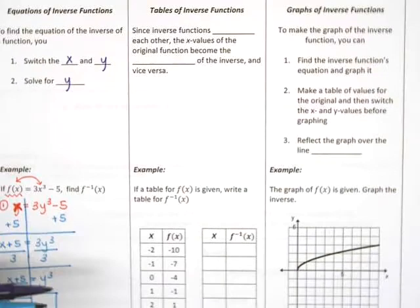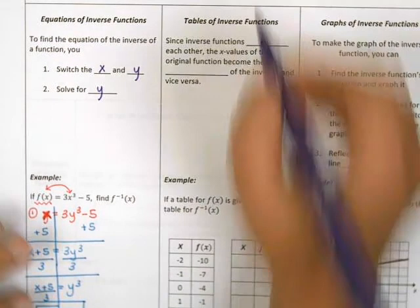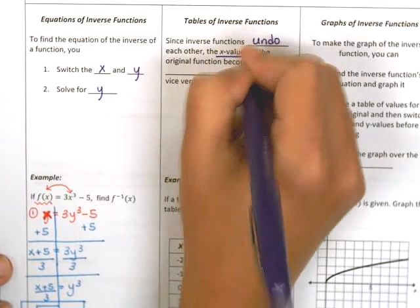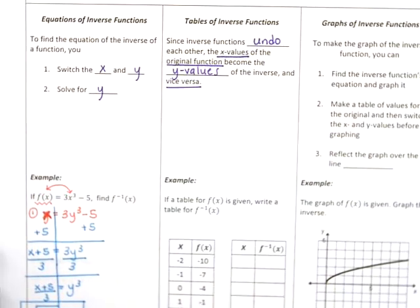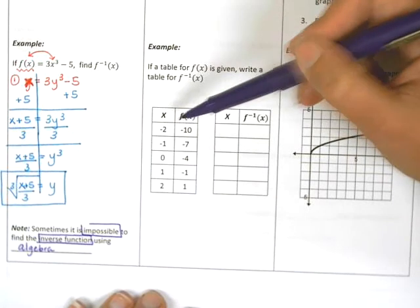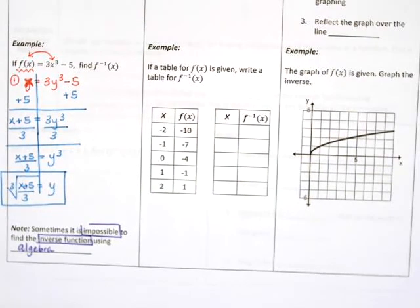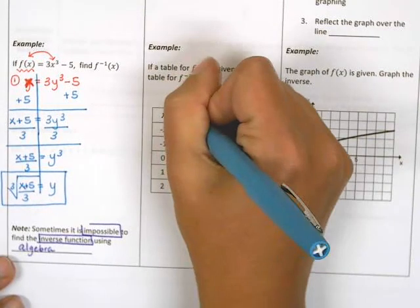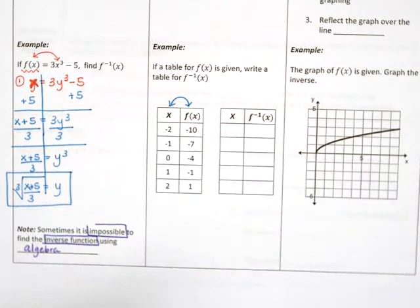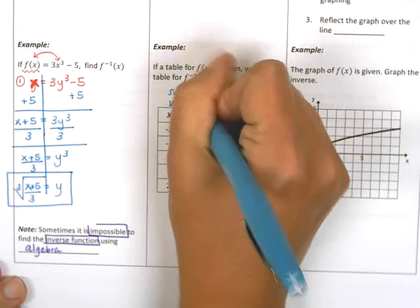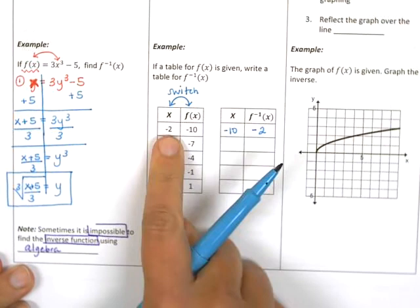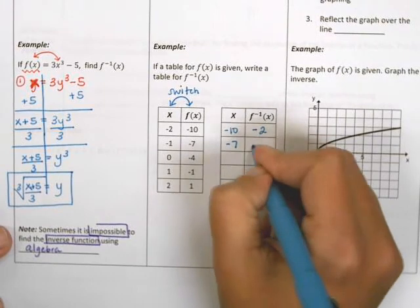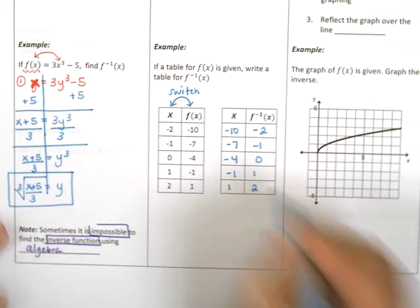Let's continue our review by looking at tables. Since inverse functions undo each other, the x values of the original become the y values of the inverse and vice versa. So if we have a table for the original, we just switch the x's and y's. My new ordered pairs would be: (−10, −2), (−7, −1), (−4, 0), (−1, 1), and (1, 2) — we're just switching the ordered pairs.